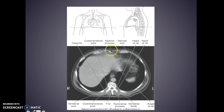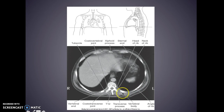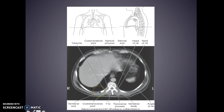Up top you have your xiphoid process and the sternal end of your rib. You have the head and neck of your rib here, your angle of your rib, with your vertebral body and your transverse process — they're saying this is T12. Here's your costotransverse joint and your costovertebral joint with your vertebral end of your rib.